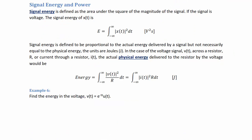Signal energy and power. Signal energy is defined as the area under the square of the magnitude of the signal. If the signal is voltage, the signal energy of x(t) is E = ∫₋∞^∞ |x(t)|² dt. The units are V²·s. Signal energy is defined to be proportional to the actual energy delivered by a signal, but not necessarily equal to the physical energy. The physical energy in joules is ∫₋∞^∞ v²/R dt, or ∫₋∞^∞ i²R dt, which is what you studied in your circuits course. Signal energy has units of V²·s and there won't be a resistor.